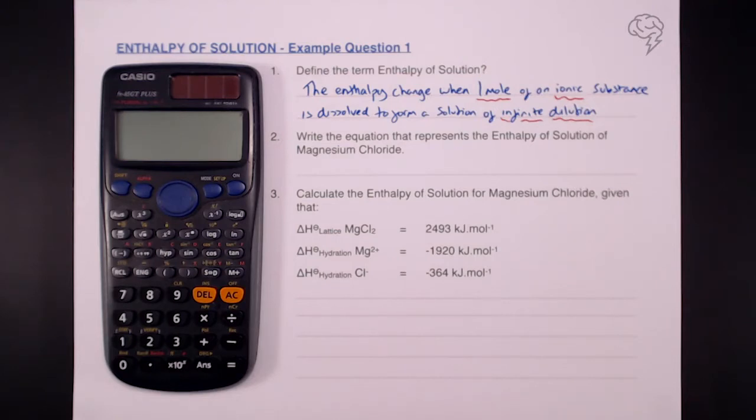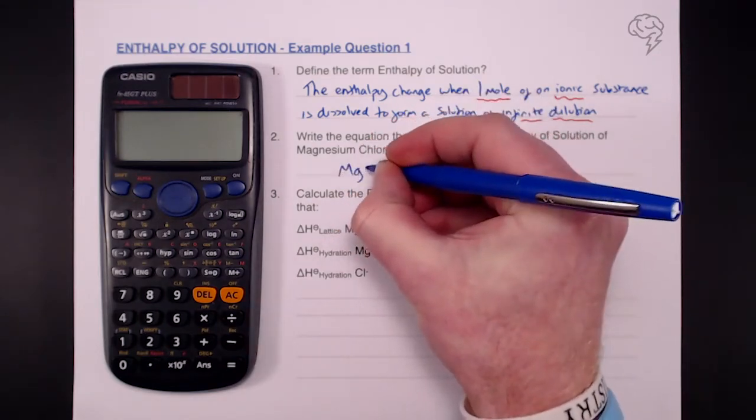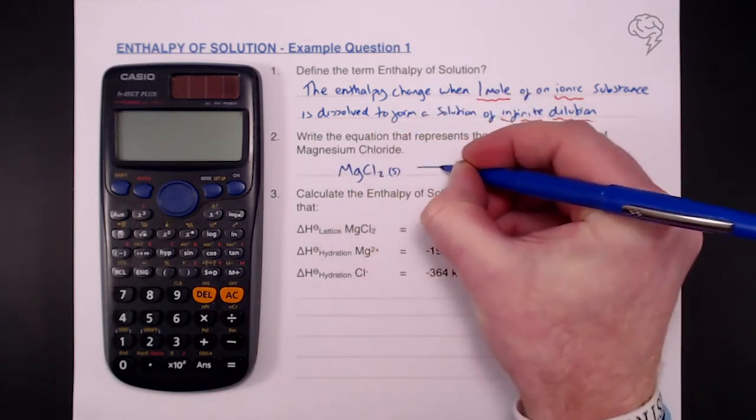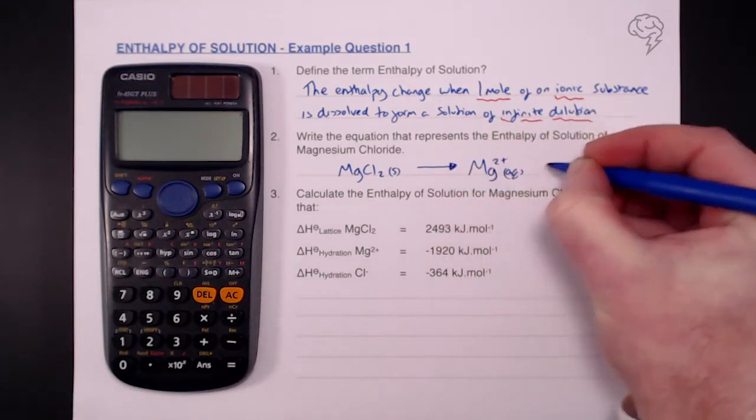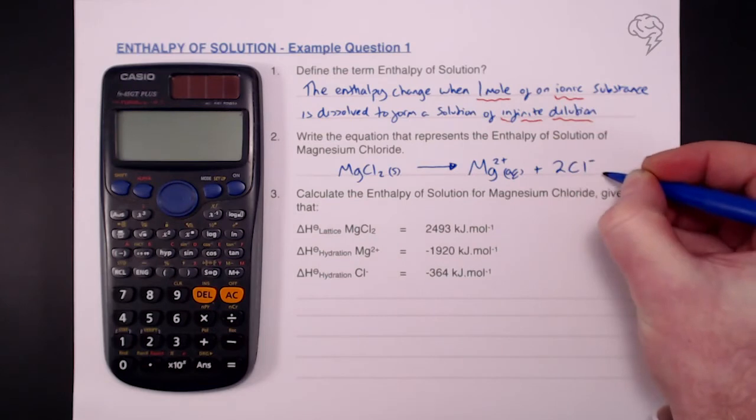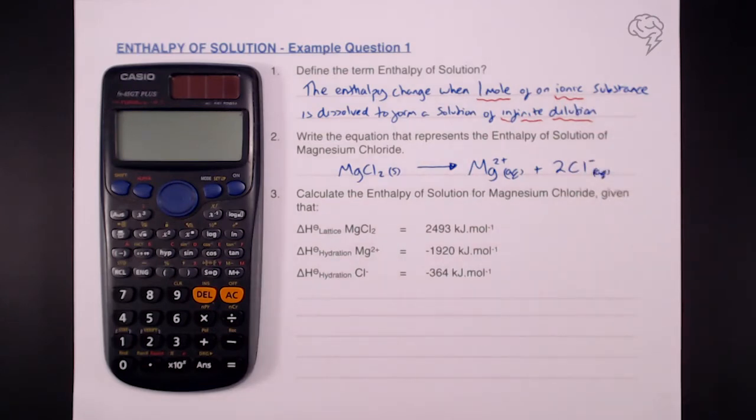Question two, write the equation that represents the enthalpy of solution of magnesium chloride. So we have our definition, it's a specific salt that they want us to write the equation for. We take one mole of magnesium chloride solid, and that gives us one mole of magnesium ions in aqueous solution and two moles of chloride ions in aqueous solution. It's a balanced equation, but of course it's one mole of that salt that's being dissolved.